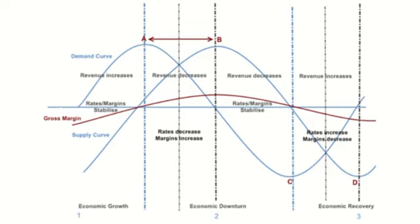The latter bottom out at point D, when supply capacity is brought back into the market. During this time, forwarders still benefit from rising volumes.